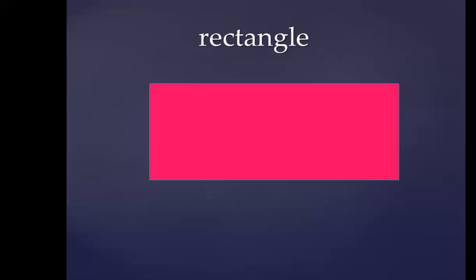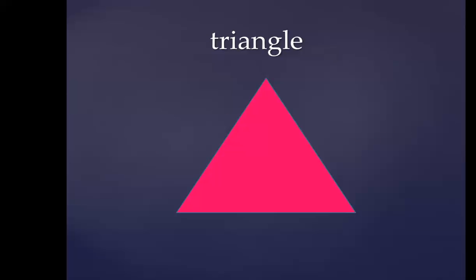Let's go to the other shape. What is the shape KG1? It's a rectangle. Say rectangle. Very good! Let's sing the song for the rectangle: Ricky rectangle, that's my name, my four sides are not the same. Ricky rectangle, that's my name, my four sides are not the same.